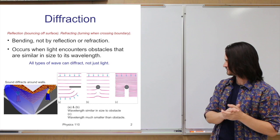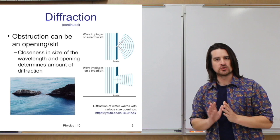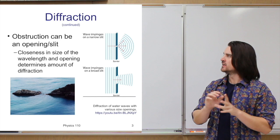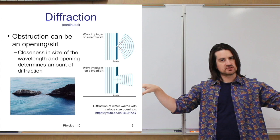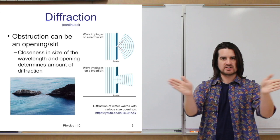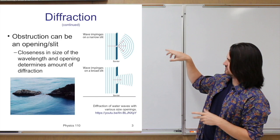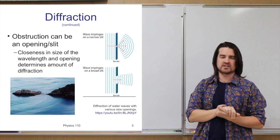Diffraction also occurs if you go through an opening. For instance, when sound goes through a doorway, people on the other side could be out to the side of the door and still hear you. That's because when the sound wave goes through, it diffracts and spreads out in both directions outside the doorway. So you have a sound wave coming into a doorway and it spreads out on the opposite side as it goes through.